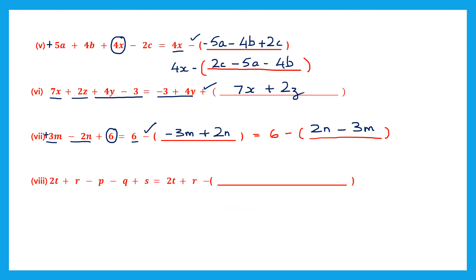Question 8. 2t plus r minus p minus q plus s — many terms on the left hand side. On the right, 2t plus r have been taken. So we only need to worry about the remaining terms: minus p, minus q, and plus s. The sign before the bracket is minus, so all these terms will change: minus p becomes plus p, minus q becomes plus q, and plus s becomes minus s. So that is our answer: p plus q minus s.